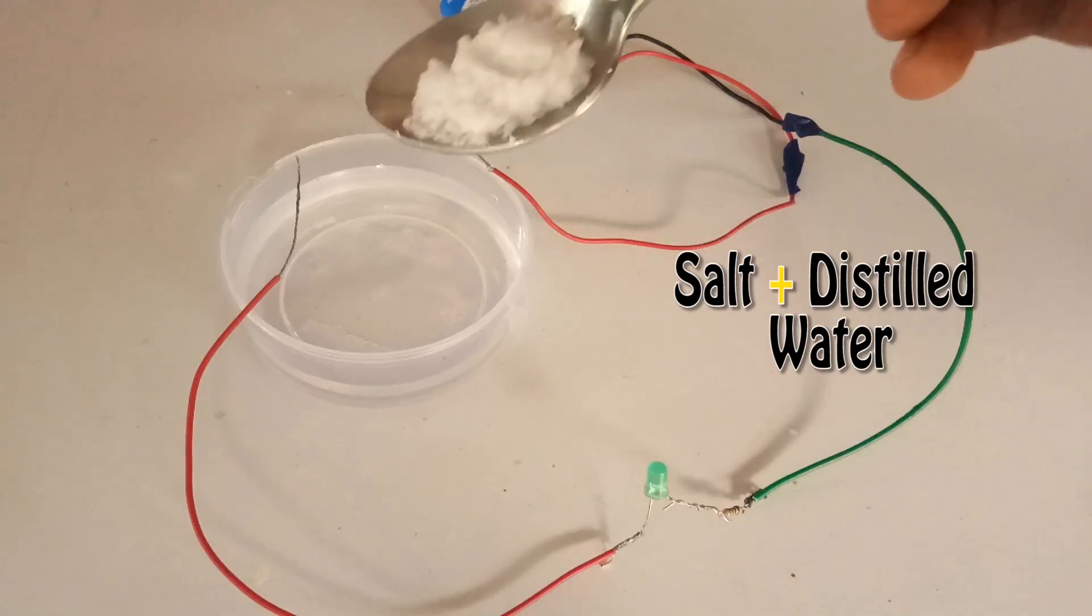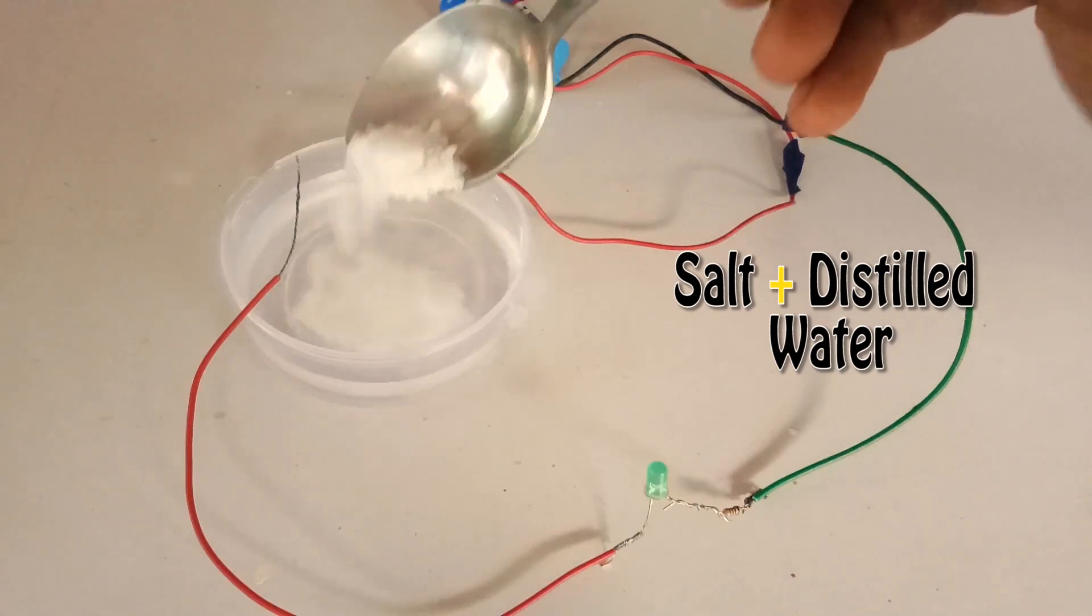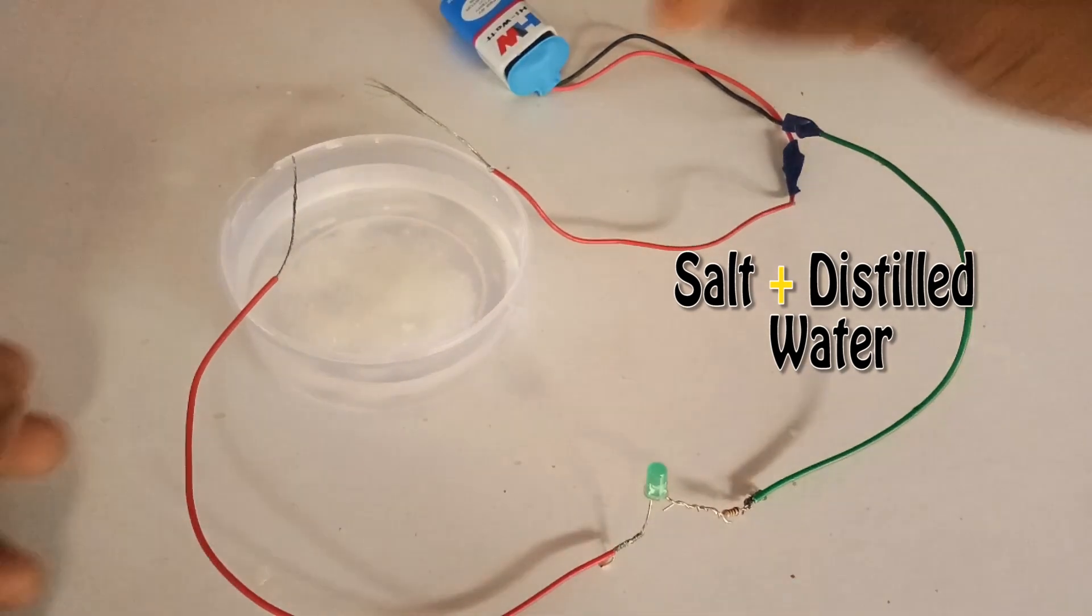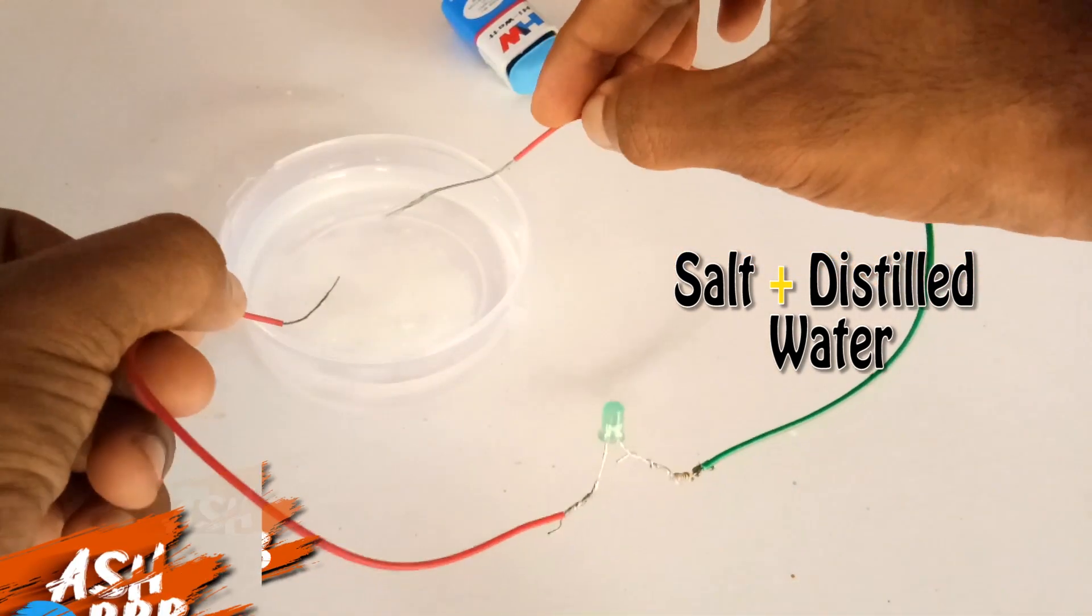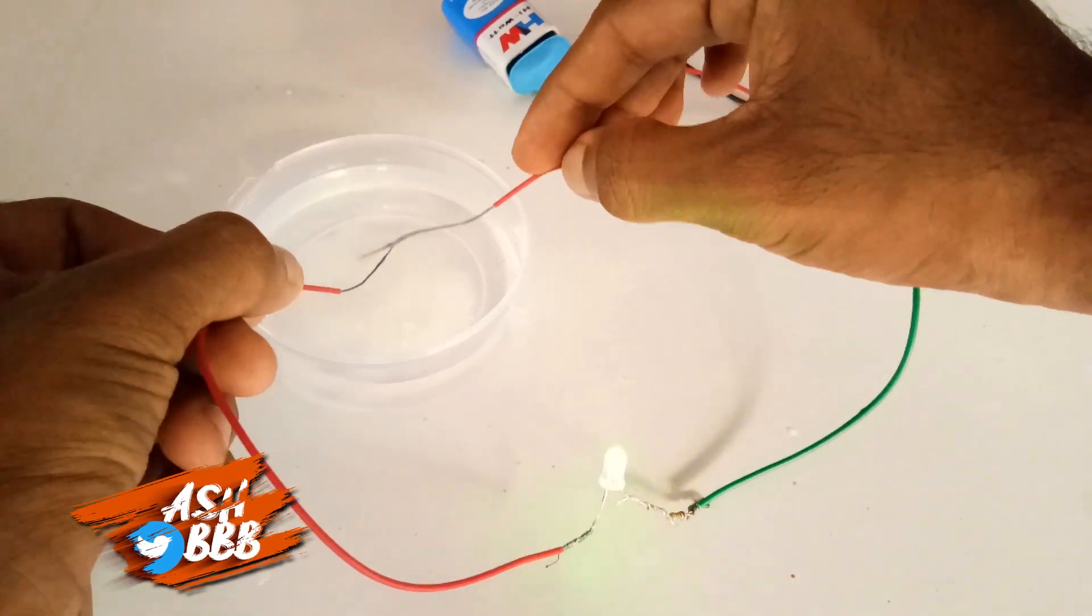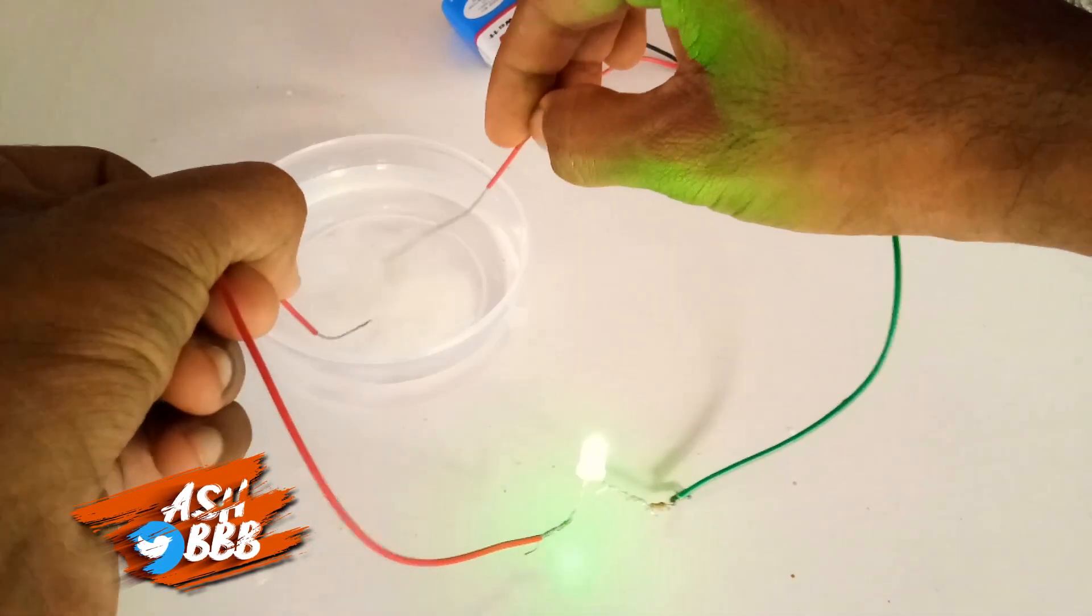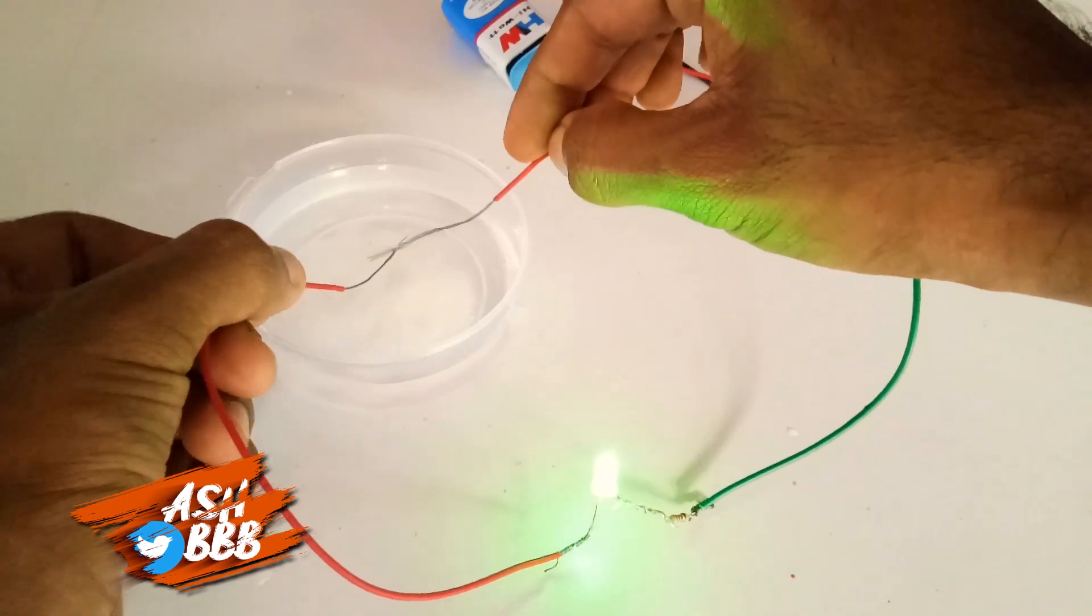Then I added some salt into the water. Let's see what happens. When I added salt, the conductivity increases. Some sort of impurities will increase the conductivity of distilled water because